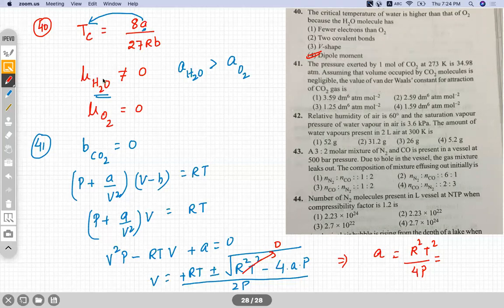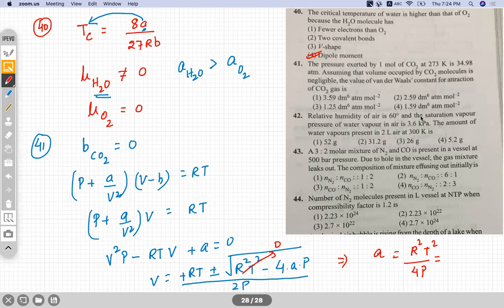For the second one, it's fine, 0.821 because pressure we have in atmospheric only. In this question, question number 42, we'll take R the SI value. But for 41, 0.821 only because pressure we have in atmospheric, correct?